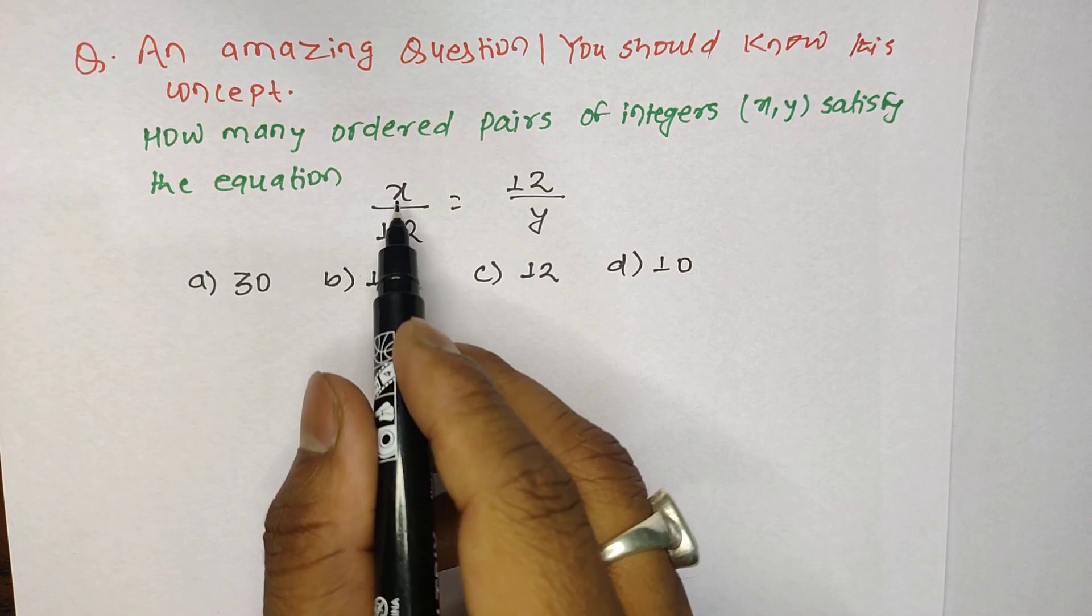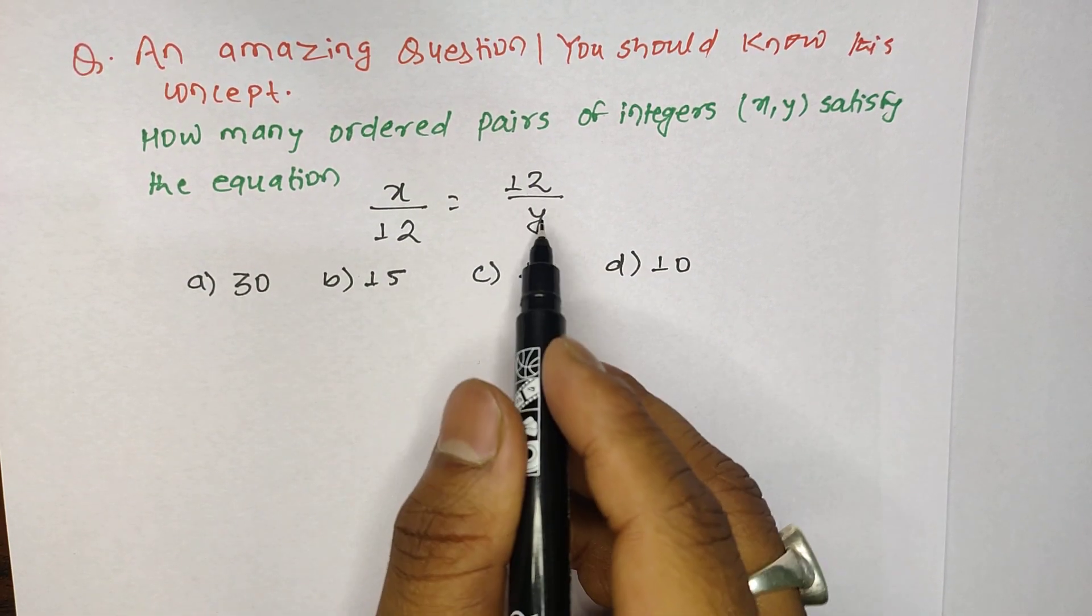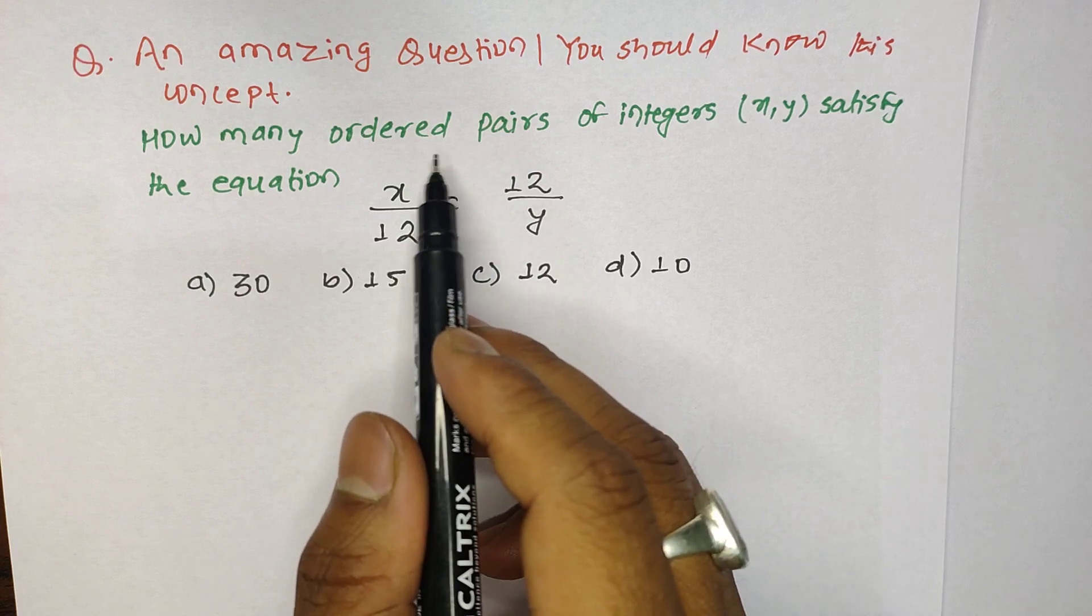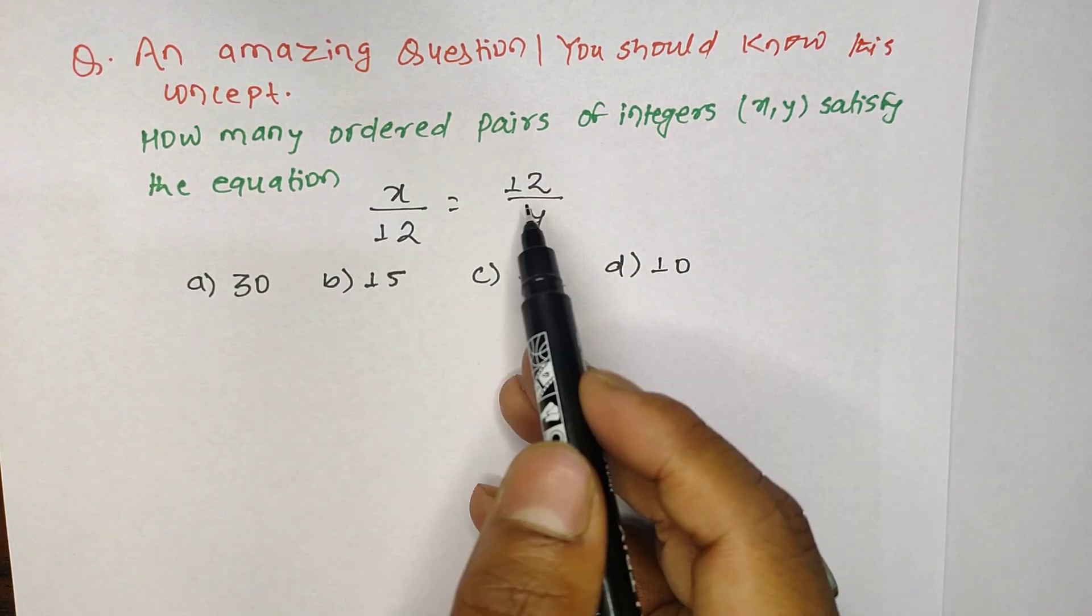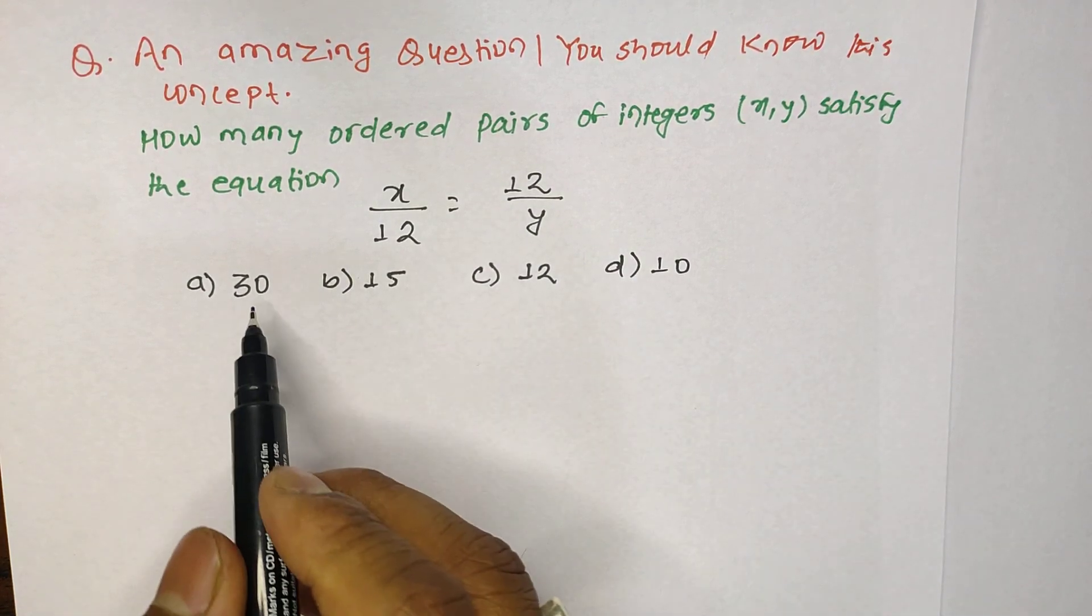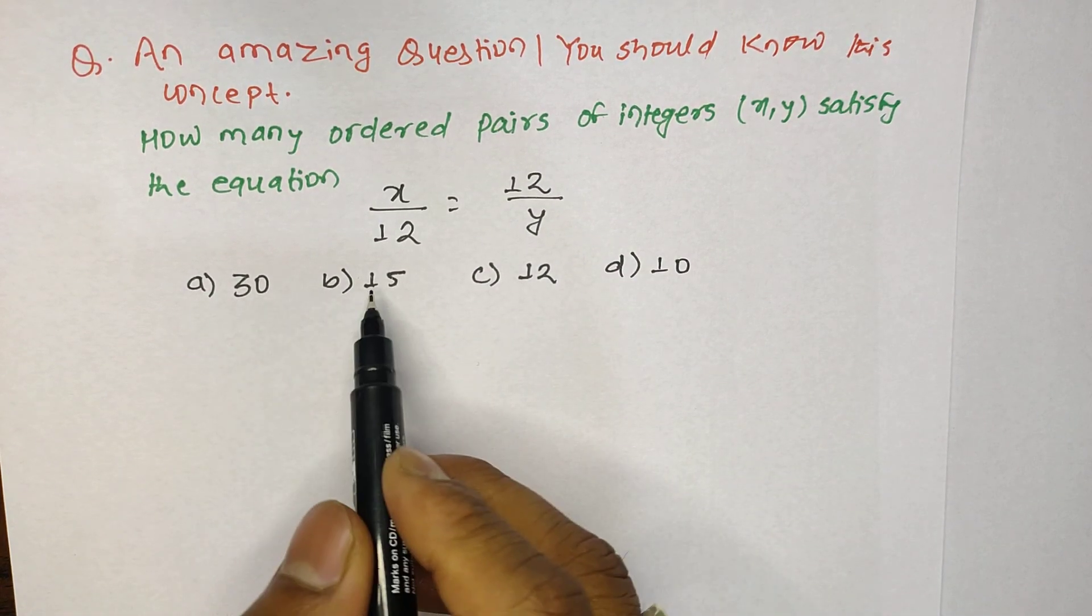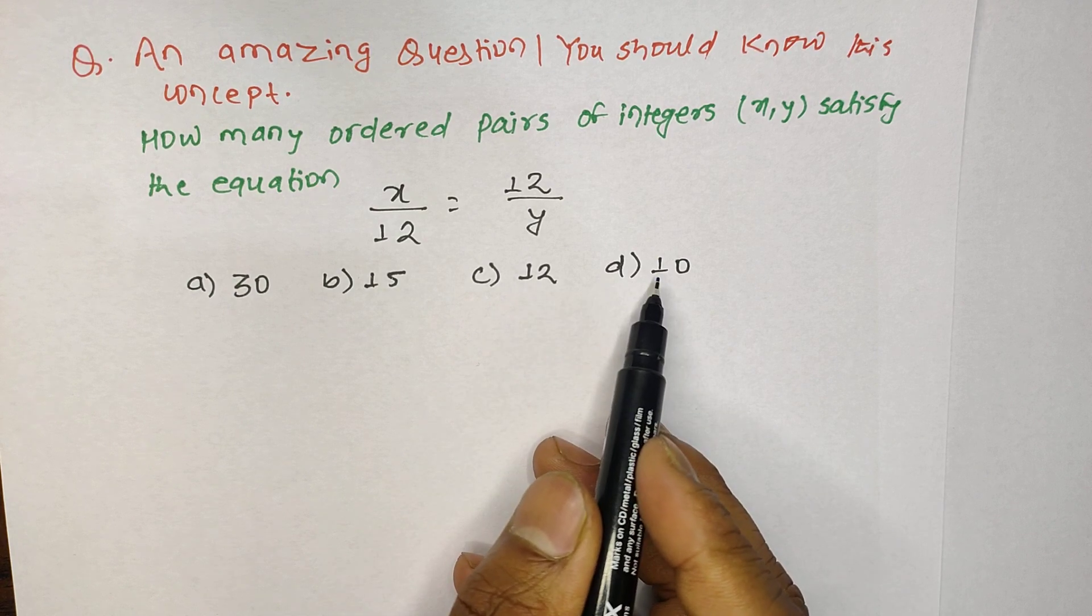It is given that x by 12 equals 12 by y, and we have to find the number of ordered pairs of integers x and y that satisfy this equation. We have four options: 30, 15, 12, and 10.